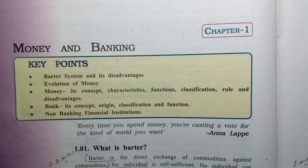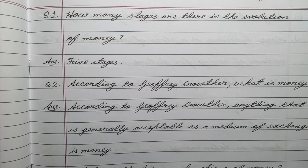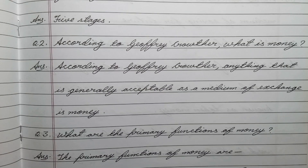Hello friends, today we will discuss some important questions of Economics Chapter 1: Money and Banking. The questions may come as multiple choice questions or short questions. Question number one: how many stages are there in the evolution of money? Answer: five stages. Question number two: according to Geoffrey Crowther, what is money?